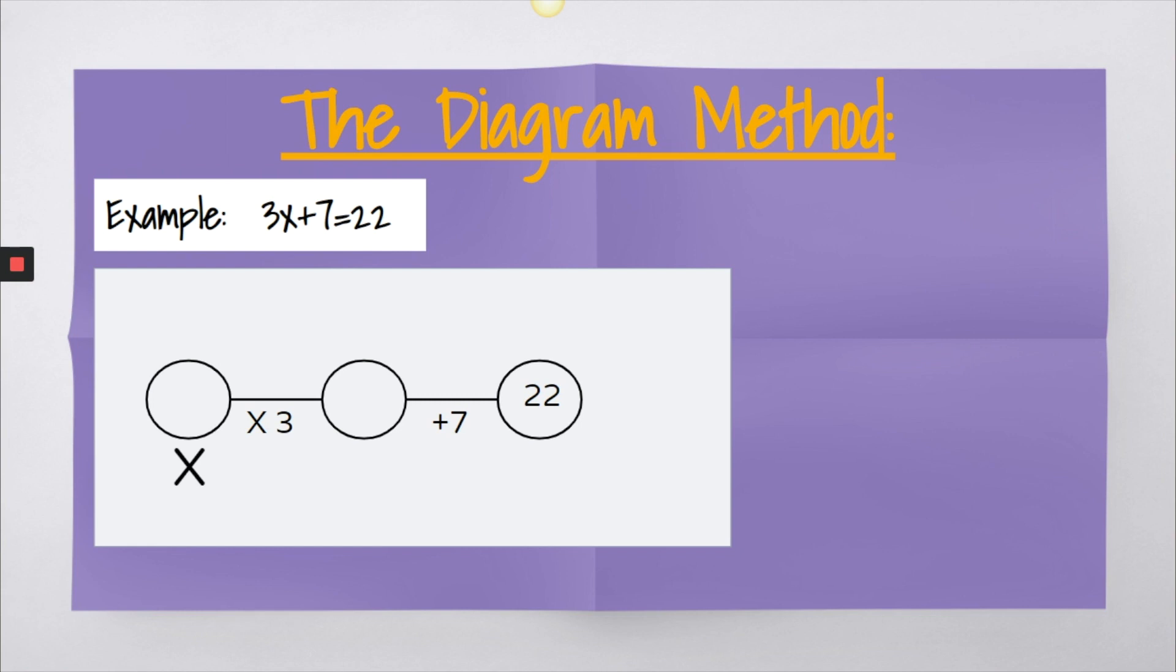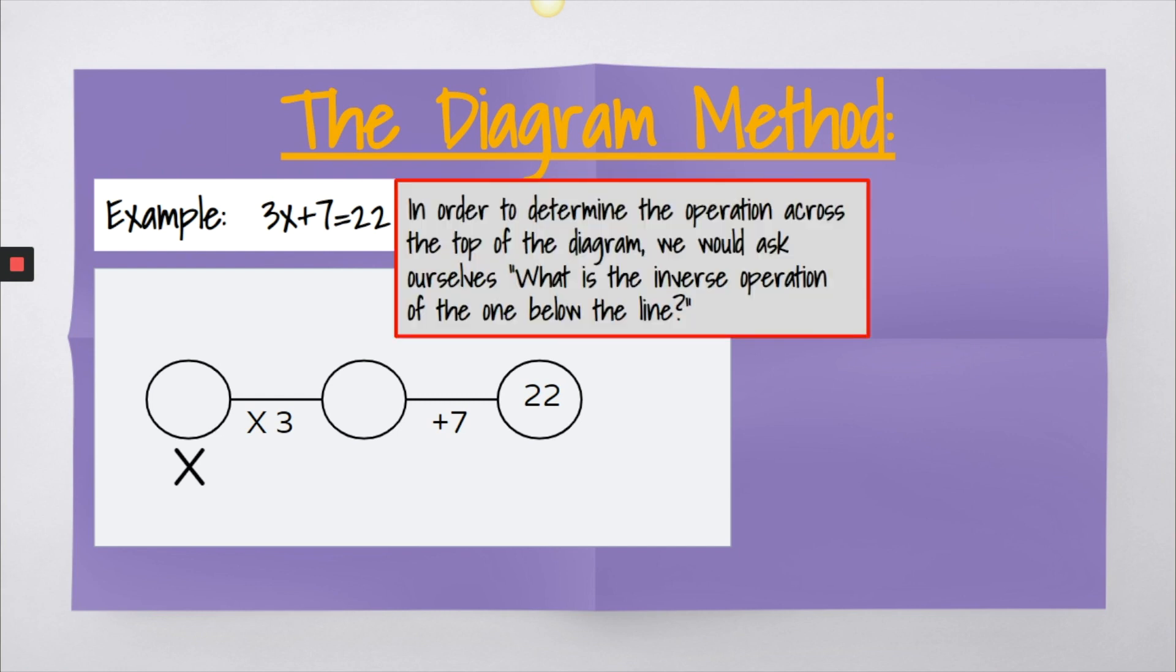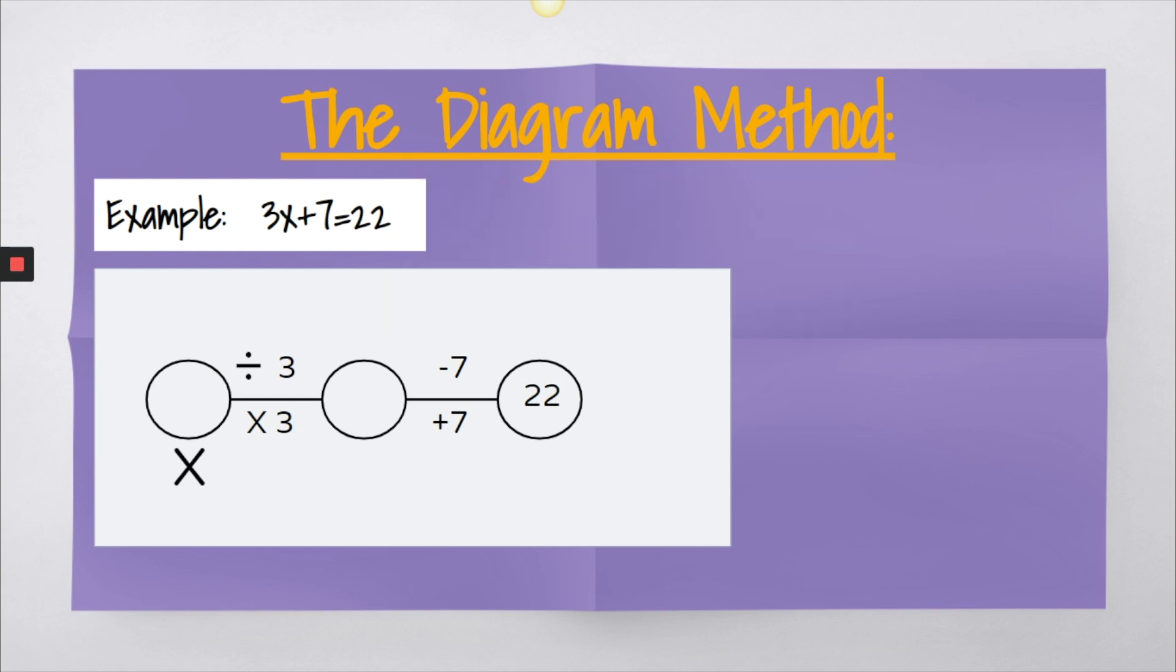So we've taken care of the first part. This is a great method for emphasizing inverse operations. So that's the next question we're going to ask. You might need to use words like opposite along with inverse operations when you first start this or as a refresher, but they should already be familiar with that term. So in order to determine what's going to go on top of these lines, and this is where we'll solve our equation, you want to ask what is the inverse operation of the one below the line. So for example, here I see plus 7, so above that I would say minus 7. Over here I have times 3, so above that line I would put divided by 3.